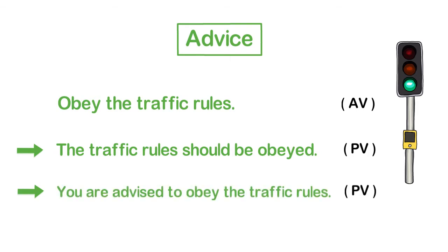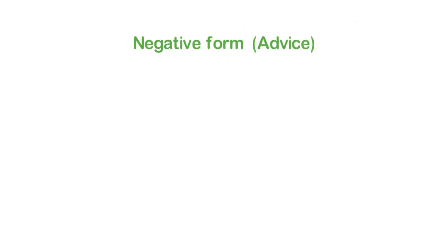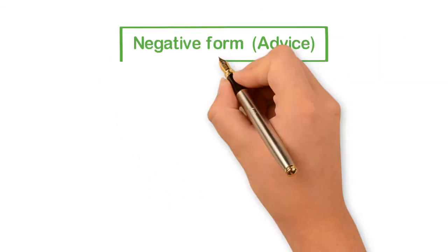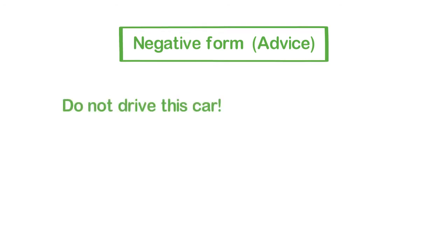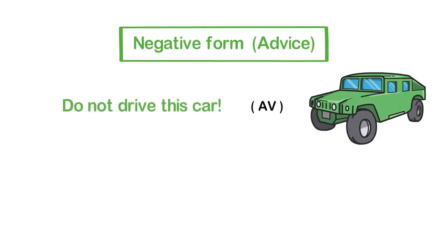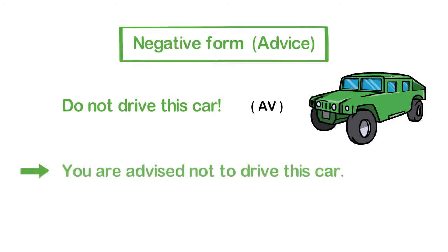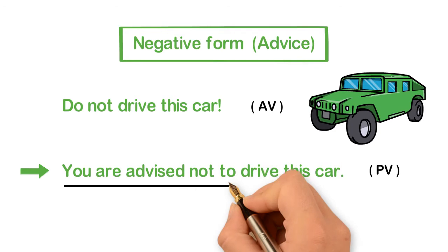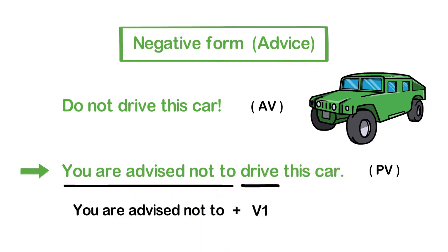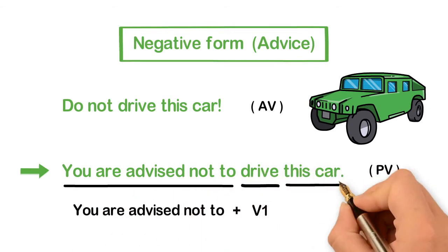For changing the negative form of imperative advice, we can use this structure: 'Do not drive this car' becomes 'You are advised not to drive this car.' The structure is: You are advised not to + verb + object.